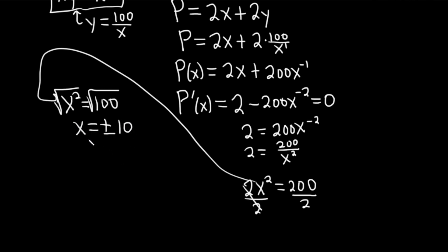Automatically we know we can reject the answer negative 10 by the physical nature of this problem. It's a rectangle, you cannot have a negative length, so x must be equal to 10. And then to find your y, you basically take your x and you plug it into your formula, which is 100 over x, so y is equal to 100 over x, 100 over 10, that's equal to 10. The answers are x equals 10, and y equals 10.